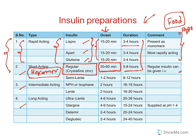For intermediate acting insulins, the onset is around 2 hours, but they will act for 16 to 20 hours. These are a kind of suspension — NPH means neutral protamine Hagedorn. Insulin is converted into a suspension with the help of zinc, and a phosphate buffer is added, giving a suspension. Because of that, onset is delayed and duration of action is also extended.